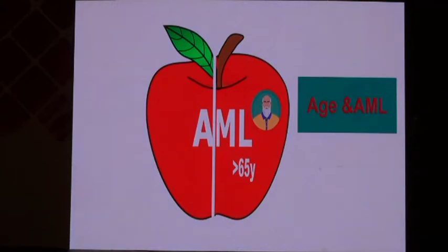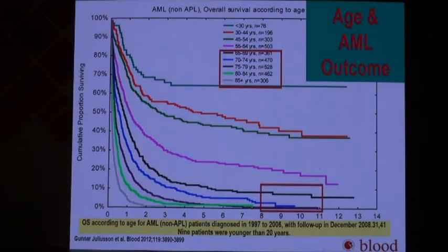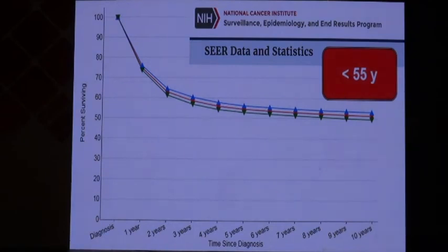By epidemiologic data, almost half of AML patients have an age above 65, and these patients always have a lot of comorbidities — age-related or otherwise. You can see on this slide how different the outcome is based on age. The upper curve shows outcome for AML patients less than 30, and the lower curve shows how bad the outcome is for those with disease beyond age 65.